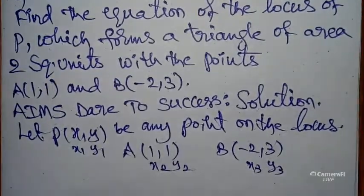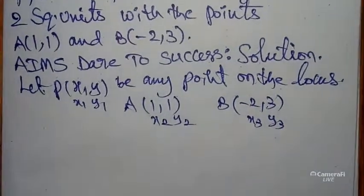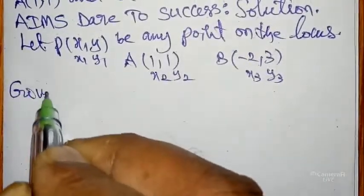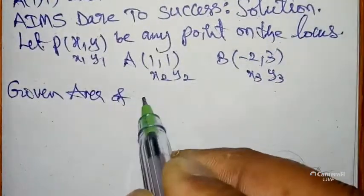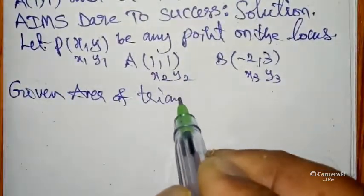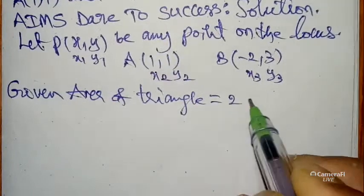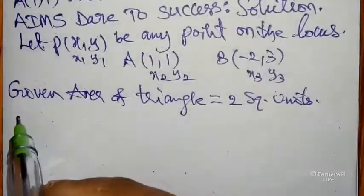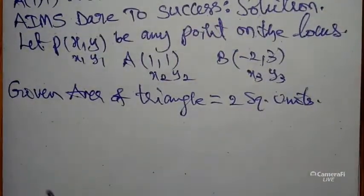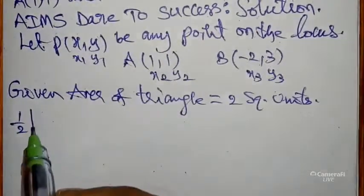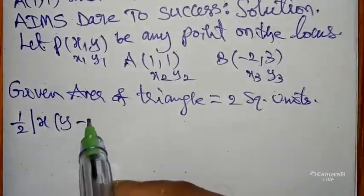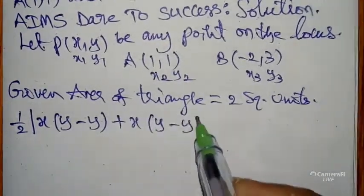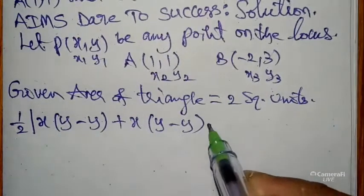Now given value is area of the triangle is 2 square units. So what is the area of the triangle formula? I will give you with my logic: 1/2 into mod, write x₁ into (y₂ - y₃) plus x₂ into (y₃ - y₁) plus x₃ into (y₁ - y₂) equals 2.